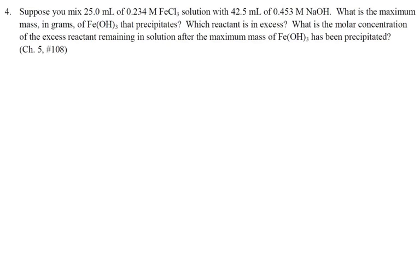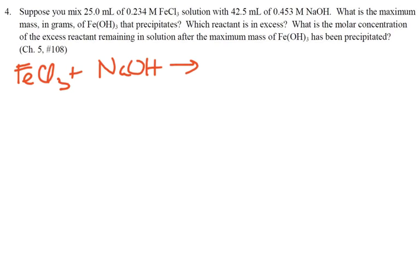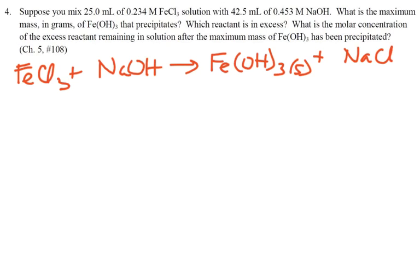Number 4. Suppose you mix some iron chloride with sodium hydroxide. What is the maximum mass in grams of iron hydroxide that precipitates? Which reactant is in excess? What is the molar concentration of the excess reactant remaining in solution? Let's get an equation: iron chloride plus sodium hydroxide — double replacement — gives iron hydroxide as a precipitate and sodium chloride. We'll need the balanced equation coefficients.